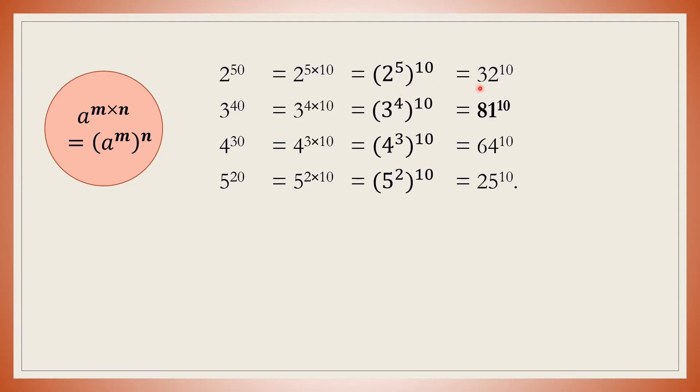Option B: 3 power 40 can be written as 3 power 4 into 10, which equals 3 power 4 the whole power 10. This equals 81 power 10.